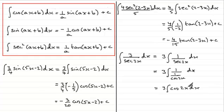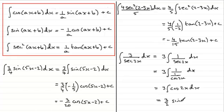This now has the form cos(ax + b) with b = 0. Using the result for integrating cos(ax + b), we get 3 times 1 over a, which is 1 over 2, so 3 times a half is 3 over 2. Then we have sin(2x) — just the 2x in this case — plus the constant of integration c.